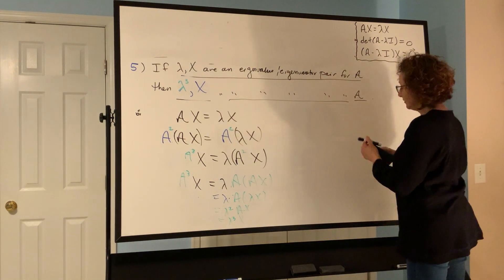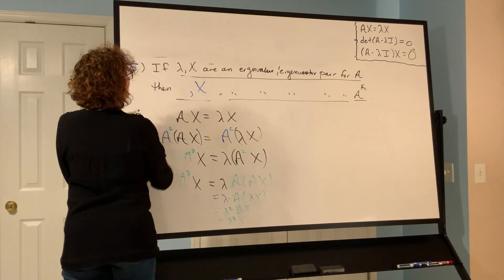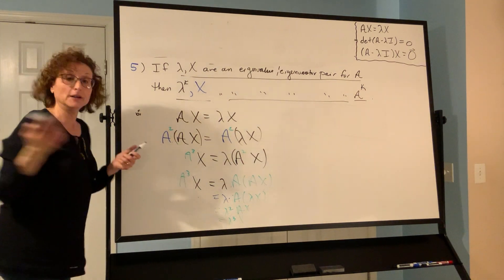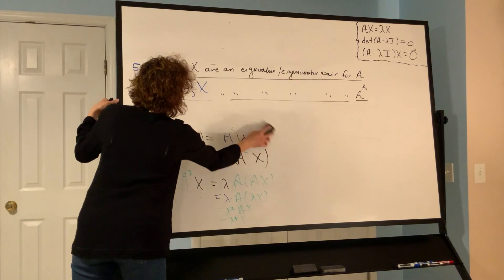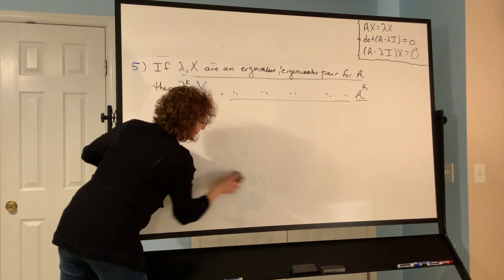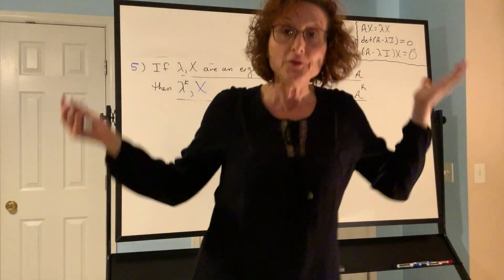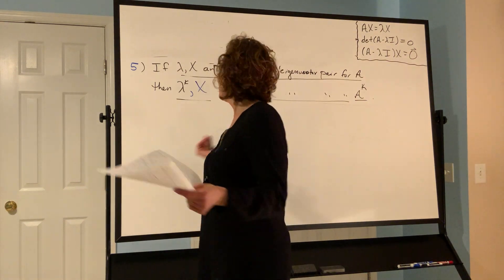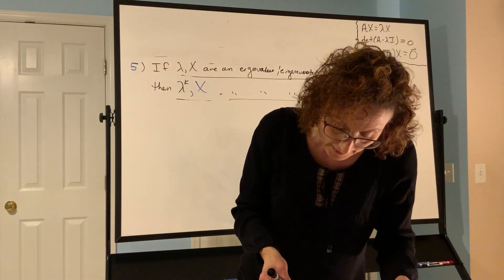In general, for any positive integer power k, A to the k times x equals lambda to the k times x. Lots of fun — you can save yourself tons of time by understanding this theory and utilizing these results. There are plenty of other interesting results for you to discover as well.